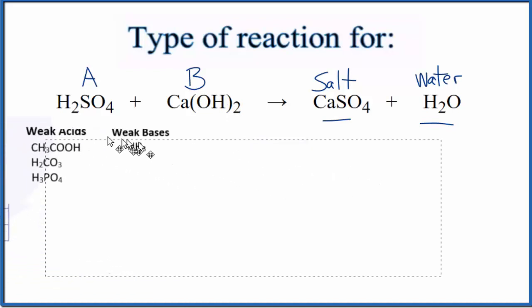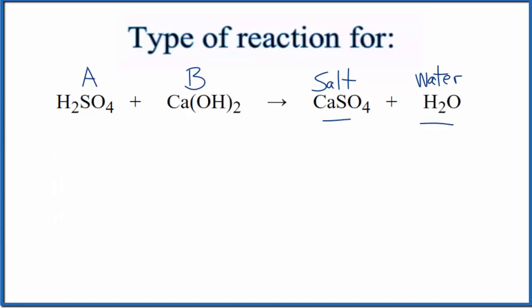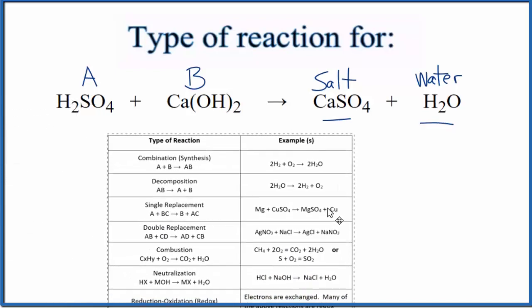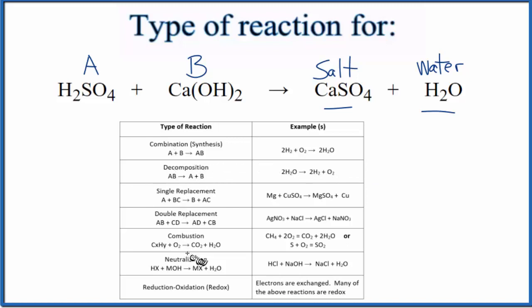We could also look at some of the general types of chemical reactions we might see. Come down here. Here's our neutralization reaction. HX, so it starts with H. MOH, that's a metal and a hydroxide. We get an ionic compound and water. Neutralization reaction.